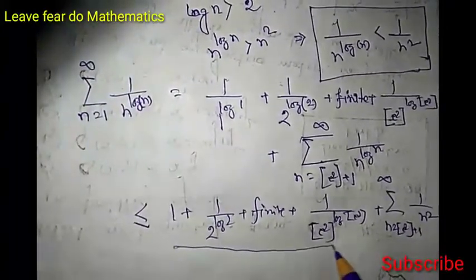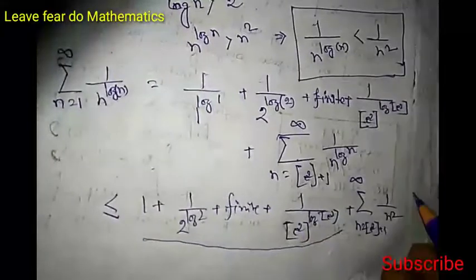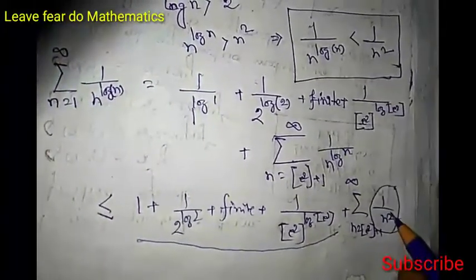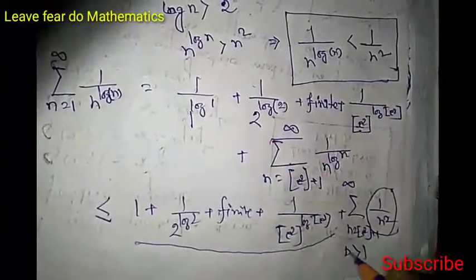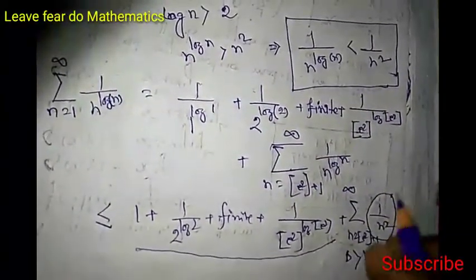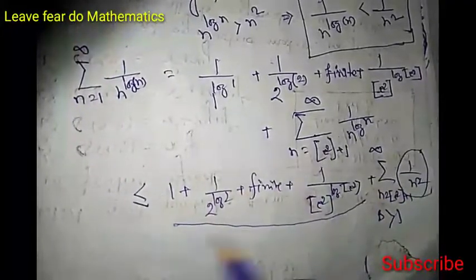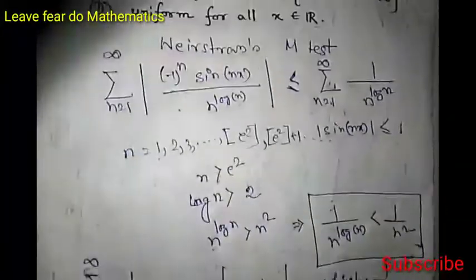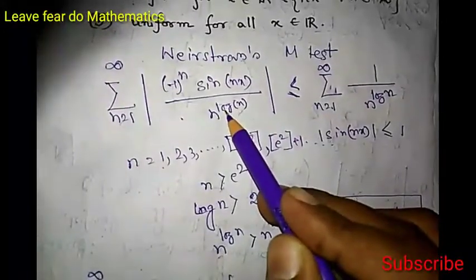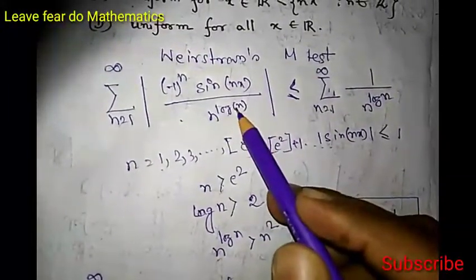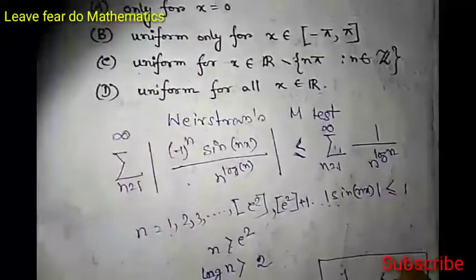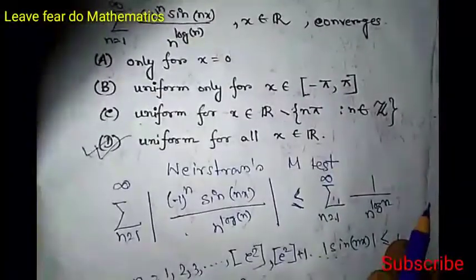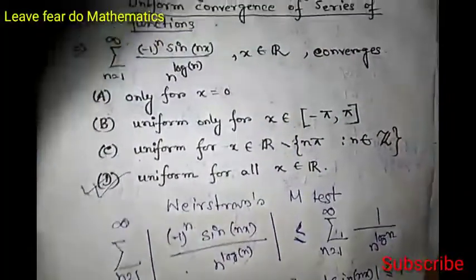Here we have a finite number of terms, and then the tail series sum from n=⌊e²⌋+1 to infinity of 1/n² appears. This is a p-series with p=2, and a p-series is convergent for p > 1. Since p=2 > 1, this series is convergent. Therefore the right-hand side converges, so the original series is absolutely and uniformly convergent by the Weierstrass M-test, and convergent for all x in ℝ. So option D is the correct answer; all other options are wrong.